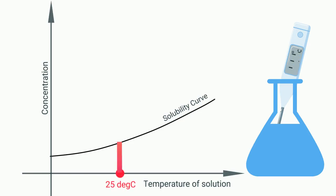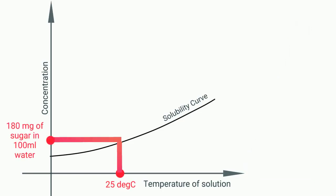For example, at room temperature, a maximum of 180 milligrams of sugar can dissolve in 100 ml of water.